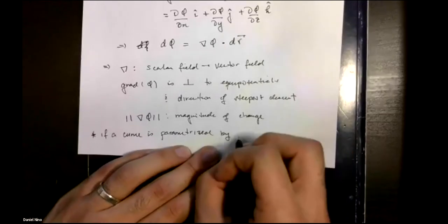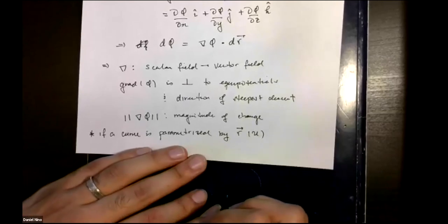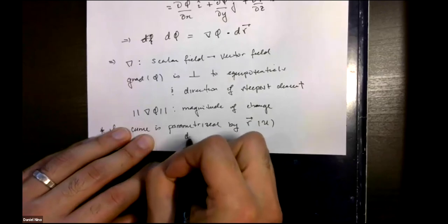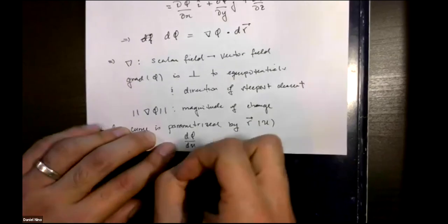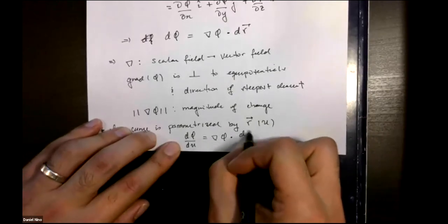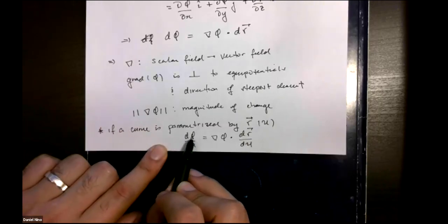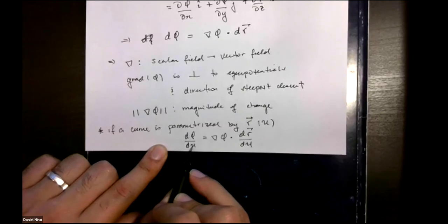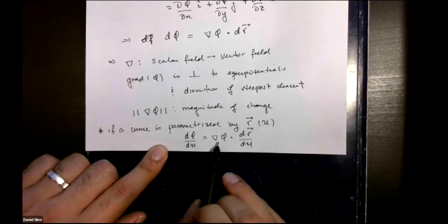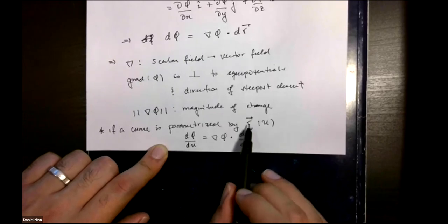As a side note, if you want to know the gradient along some curve that's parametrized, like we saw in the last module, the rate of change of phi with respect to your parameter u — which encodes the variation of your curve — is given by the dot product between the gradient of phi and the derivative of your curve with respect to u.